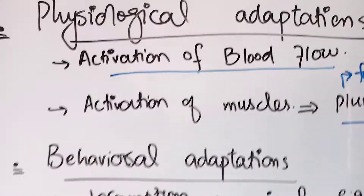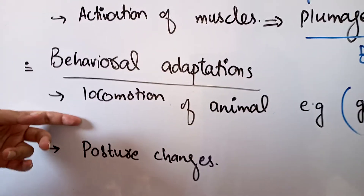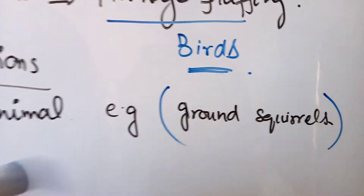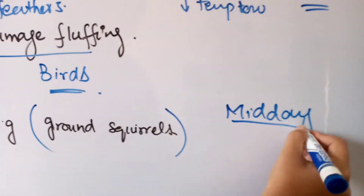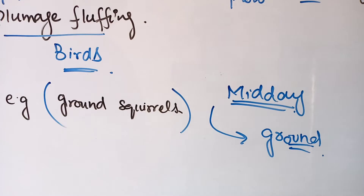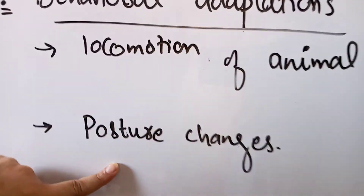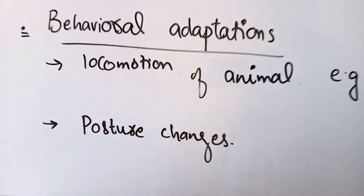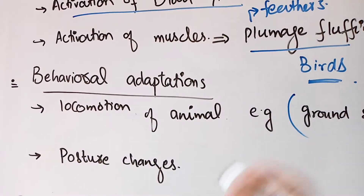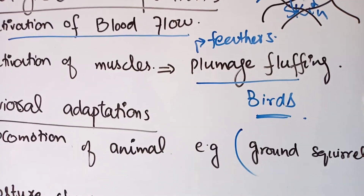The third category is behavioral adaptation. Animals varying in temperature will locomote to different areas when the environment changes. For example, ground squirrels — when the sun is at its highest at mid-day, they move to the ground to avoid excess heat. We also notice posture changes: when the temperature is high, animals change posture to expose more body surface area so that heat is removed more effectively.